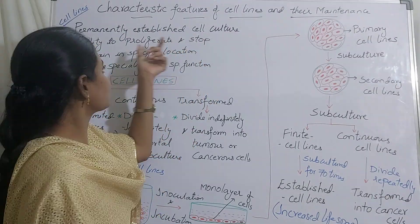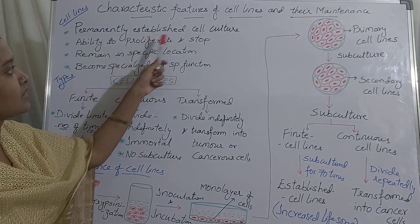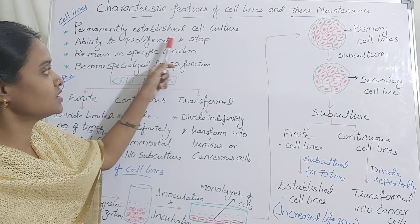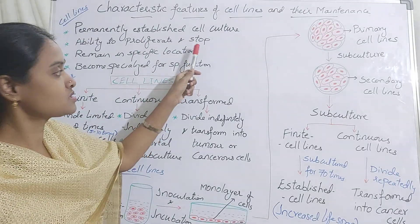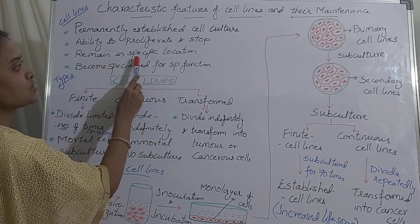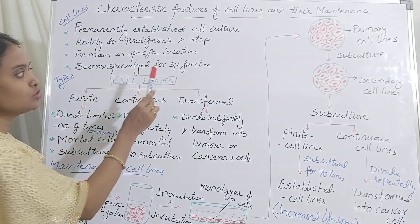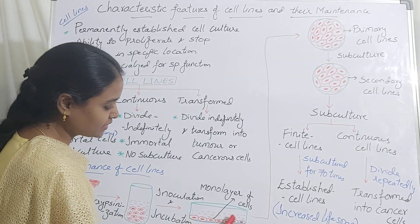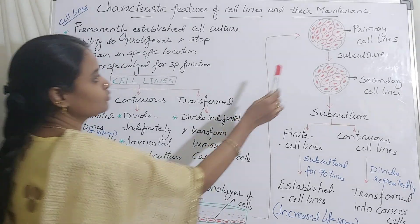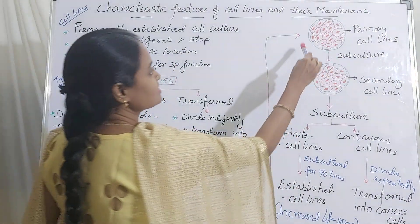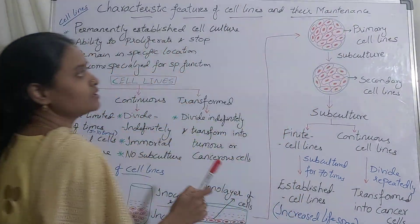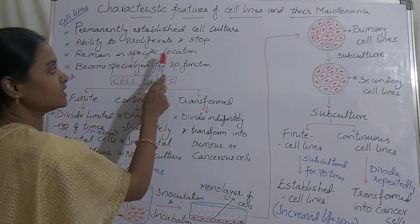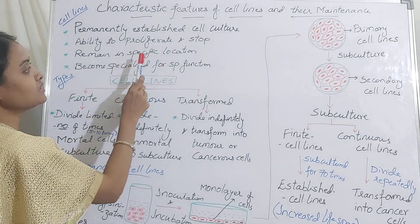So the cell lines are permanently established cell cultures which have ability to proliferate and also stop after certain cell divisions. They remain in a specific location. When you subculture the cells, they occupy the complete area — whatever you are providing. From the top view, you can see they spread as a uniform layer of cells and they divide. They occupy the complete space and remain in the specific location.